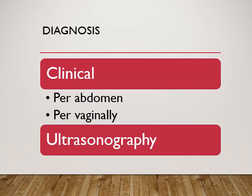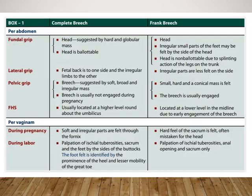Breech presentation may be diagnosed by clinical examination or ultrasonography. On clinical examination of complete breech: in the fundal grip you can feel a hard globular mass which is ballotable; on lateral grips you can feel the fetal back on one side and the limbs on the other side; on pelvic grip we can feel the breech, which is a soft broad irregular mass and usually not engaged during pregnancy. Fetal heart sound is usually located at a higher level around the umbilicus.